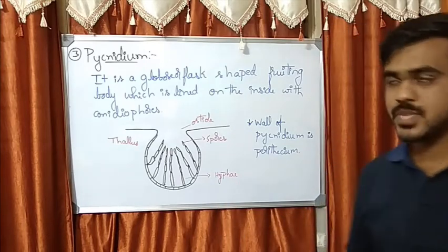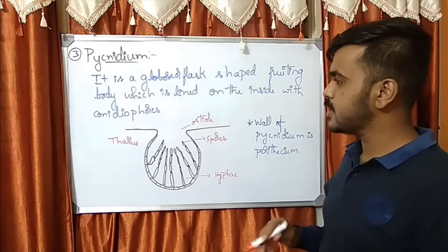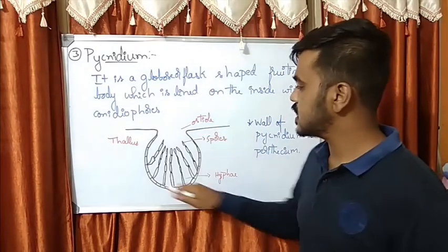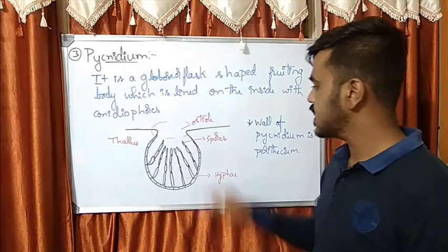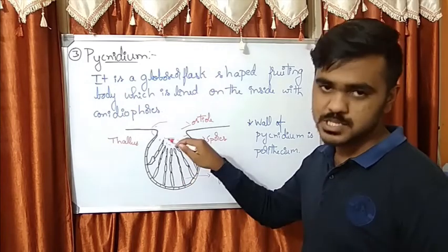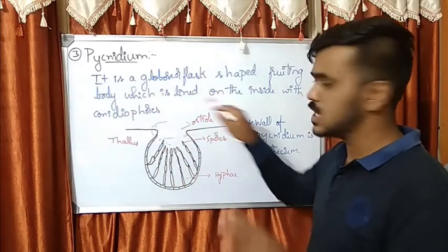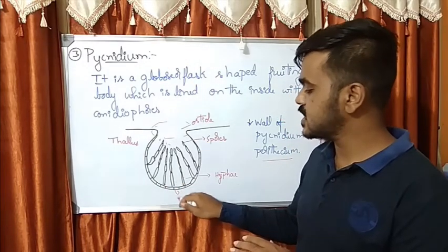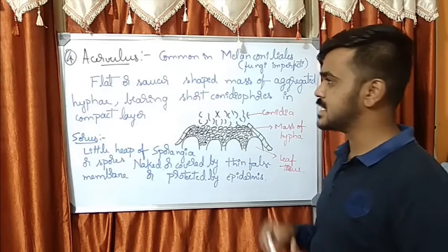Next is the pycnidium — it is a globose or flask-shaped fruiting body lined on the inside with conidiophores. As seen in the image, it is globose or flask-shaped, with an opening called the ostiole. The spores are formed here on the hyphae, and these conidiophores are lined inside the wall of this fruiting body. The wall of the pycnidium is called the perithecium.